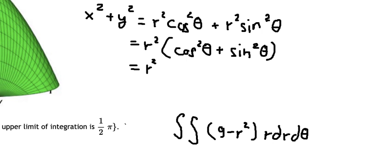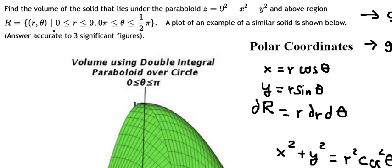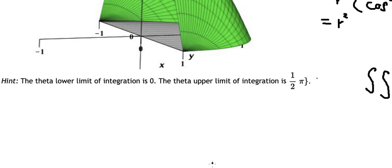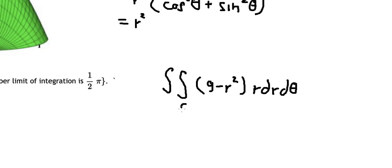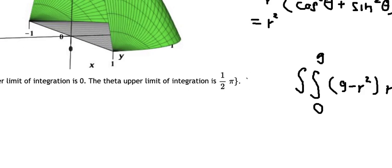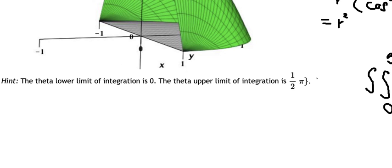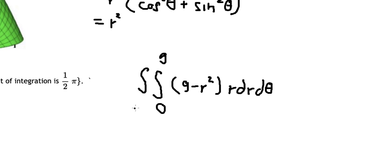About dr, let's provide in here from zero to number nine, so we put zero and number nine in here. D theta, let's provide in here, so that should be from zero to pi over two.